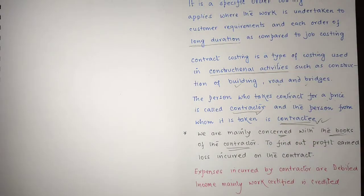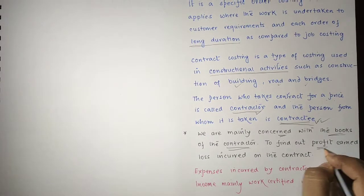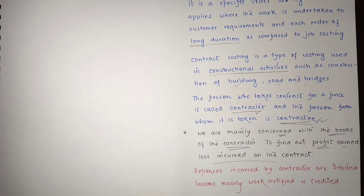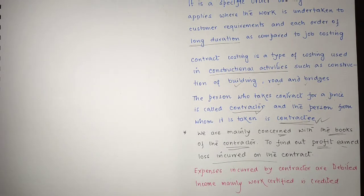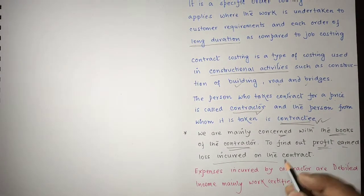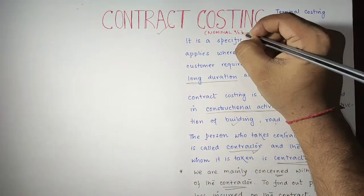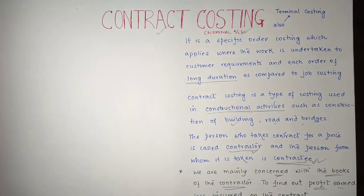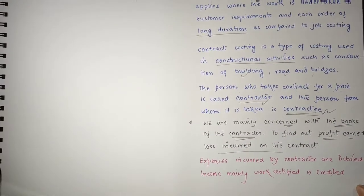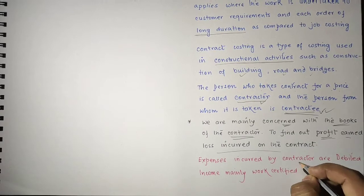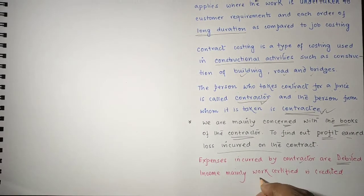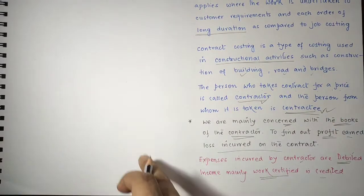Contract costing is done to ascertain the profit or loss incurred in the contract. The most important thing is that contract costing is of nominal account nature. Expenses incurred by the contractor are debited and income — mainly work certified — is credited.